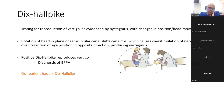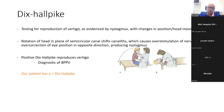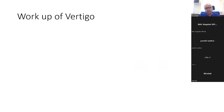During the Dix-Hallpike maneuver, the patient's head is held hanging down on one side and then the other. We ask the patient to keep their eyes open throughout and observe for nystagmus — involuntary eye movements. Nystagmus moving up and down suggests a central cause, while side-to-side nystagmus with one rapid and one slow component is more typical of peripheral vertigo.